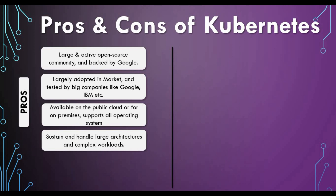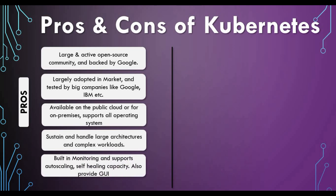Kubernetes is especially helpful when you have a large architecture and complex workloads. Even if your application has a large, complex architecture, Kubernetes can still manage it. It also has built-in monitoring, auto-scaling features like HPA (Horizontal Pod Autoscaler), self-healing capacity, and a graphical user interface for configuration.